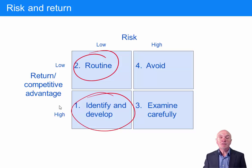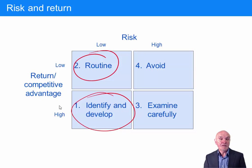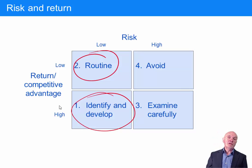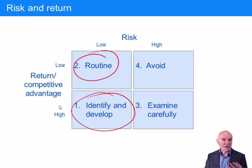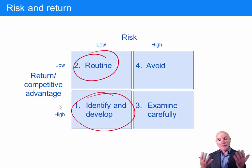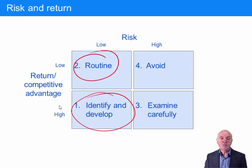Here we have low risk and high return — and this is a kind of no-brainer. You see an opportunity with very few ways you think you're going to lose a lot of money, but you foresee massive returns. Perhaps an example would be a well-respected competitor who is in financial difficulties. You take them over at a pretty low price, get the current management to sign contracts, and if the integration goes well and you get economies of scale, the returns could be very high. You definitely go for that.